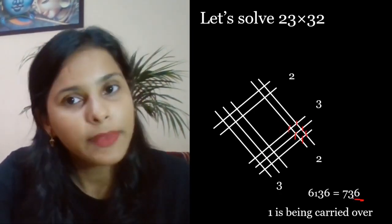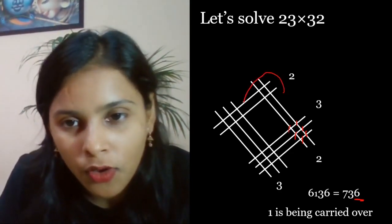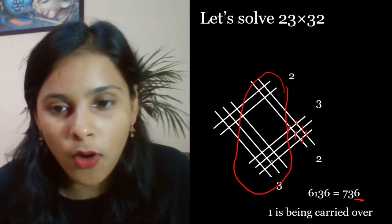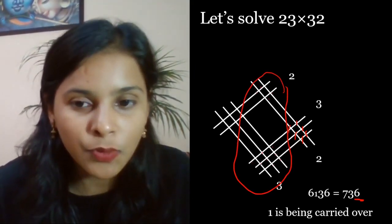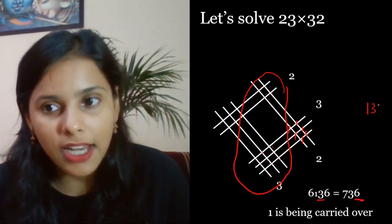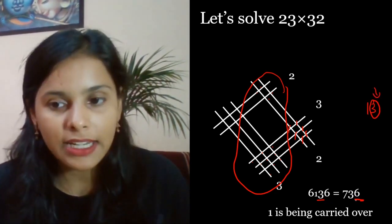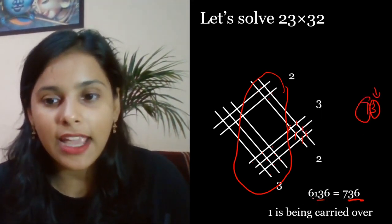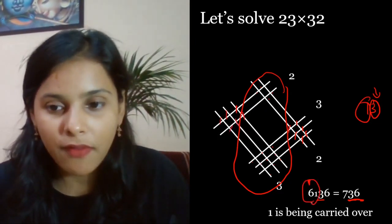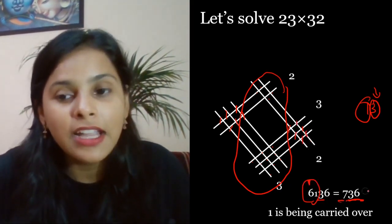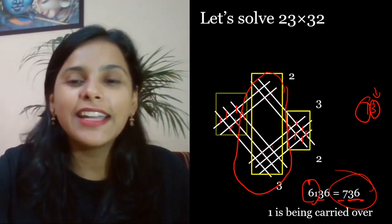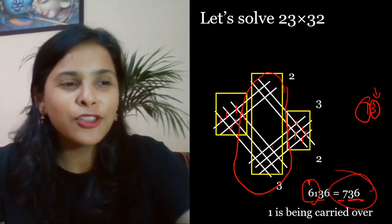Now count 1, 2, 3, 4, 5, 6, 7, 8, 9, 10, 11, 12, 13. So the answer should be 13, but you will get 1 number, so write 3 and the 1 carry forward here. 1, 2, 3, 4, 5, 6, so 1 carry forward, so it becomes 7. 7, 3, 6 is your answer. Japanese trick is great and fun and amazing. You have to make lines and count.